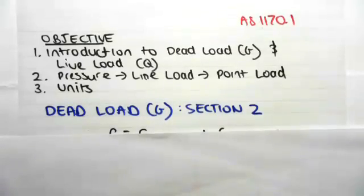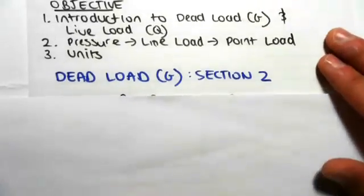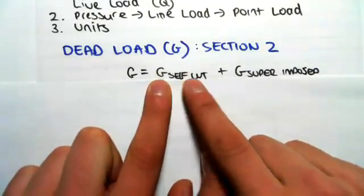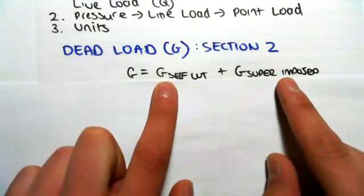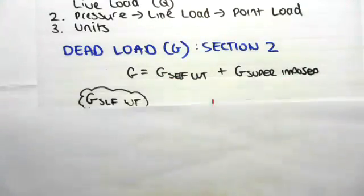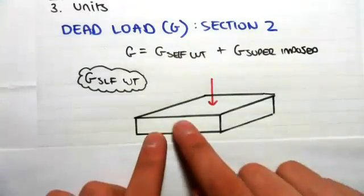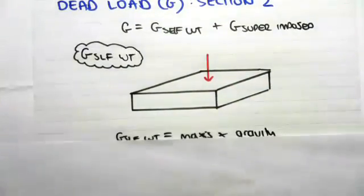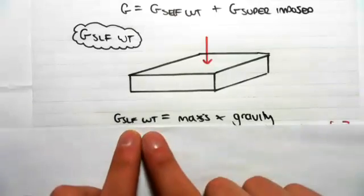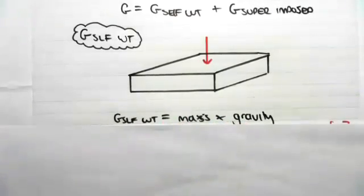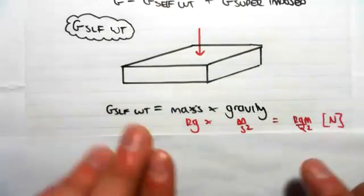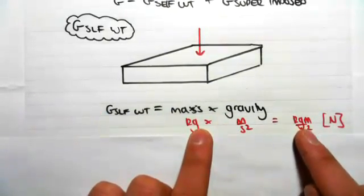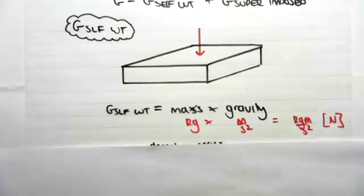Especially the dead load, it becomes a lot more intuitive to work it out. We have the dead load, which is the addition of the self weight and the superimposed dead loads — we saw this in the previous video. Dealing with the self weight first, we're going to have, say, a slab and we want to work out the point load. The basic procedure is the self weight of this slab is its mass times its gravity, which is a force. So looking at the units: kilograms times metres per second squared equals kilogram metres per second squared, which is a newton.